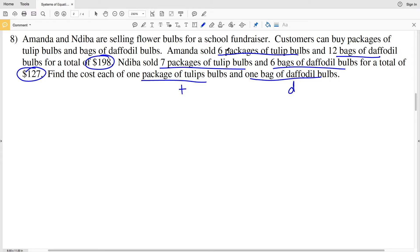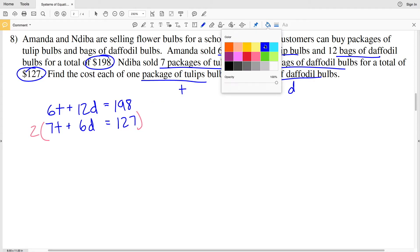So for Amanda, her total is going to be 6 times the cost of those tulip bulbs, so 6 times T, plus the 12 bags of daffodil bulbs, 12 times that cost D, equals 198. And for Nadiba, we have 7 times that cost T plus 6 times that cost D, and that's equal to 127. I'll be able to solve this using elimination, and I'm going to be eliminating my terms with variable D, because 6D will equal 12D if I just multiply it by 2. So I'm going to be multiplying my entire bottom equation by 2.